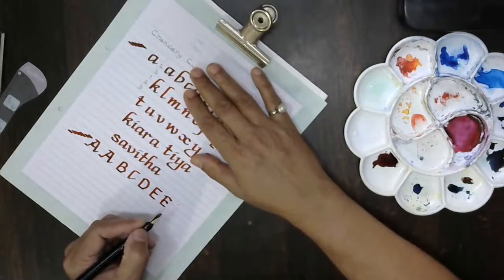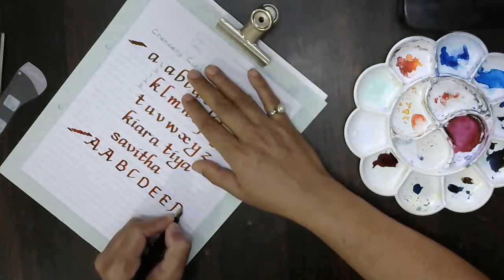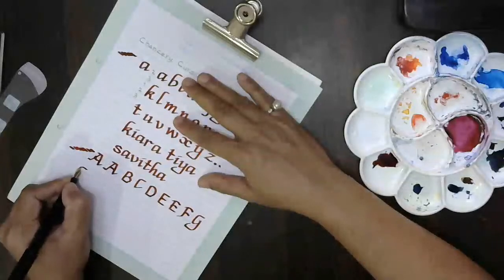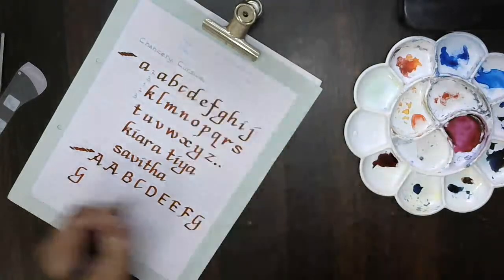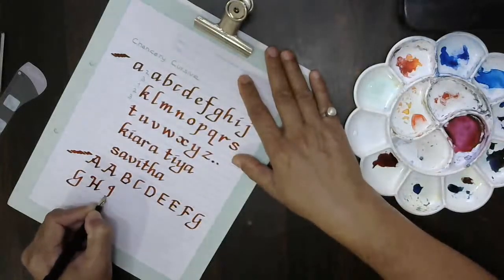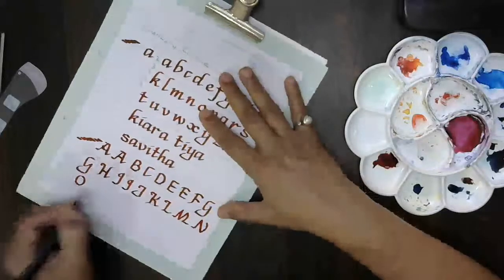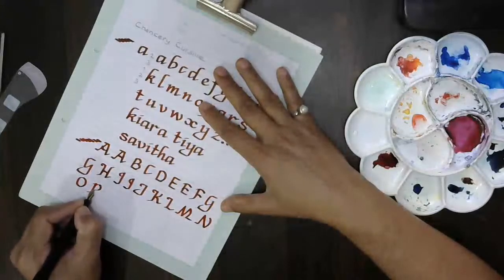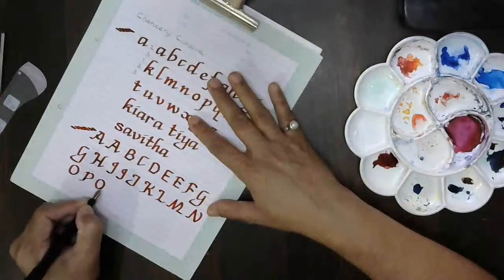I hope you all people are understanding. C. You can make a straight line also here. Come down. D, E.